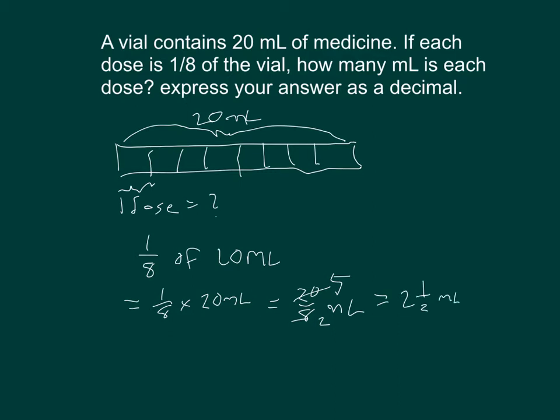And we write it out as a decimal. Two and one-half is equal to 2.5. Each dose is 2.5 milliliters.